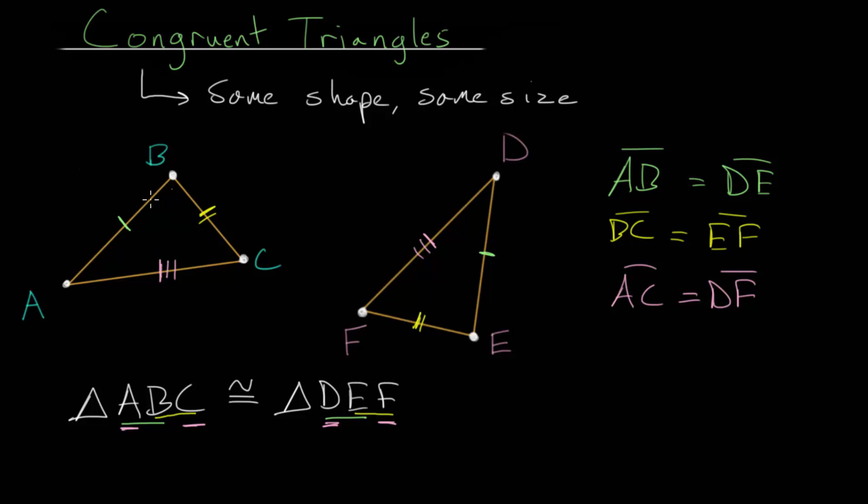And with congruent triangles, not only do they have three sets of equal side lengths, they also have three sets of equal angles. So for instance, if we look at this angle here, this would correspond to the same angle here since notice A is the first letter and D is the first letter here. So they would share equal angles, or you can think of this letter as marking the vertex of the angle. So we could write that angle BAC is equal to angle